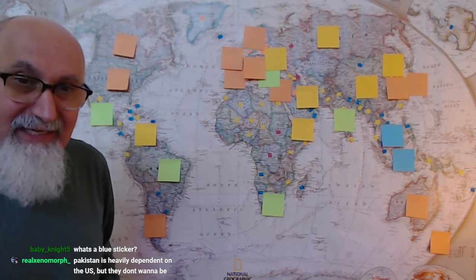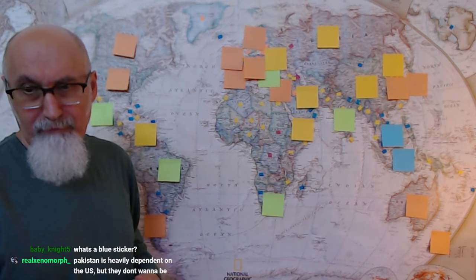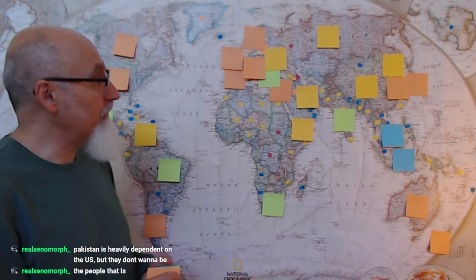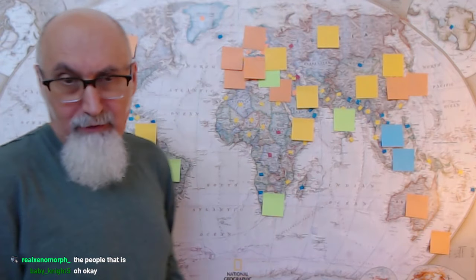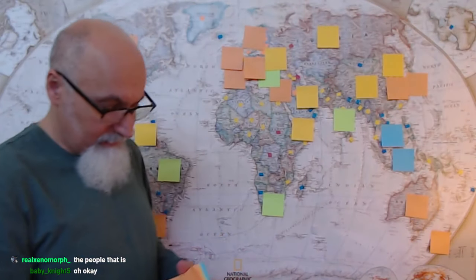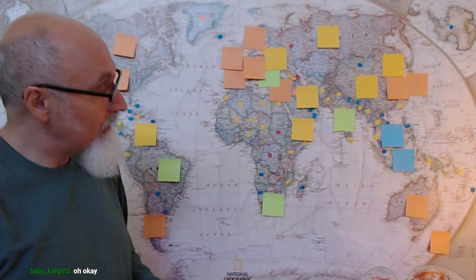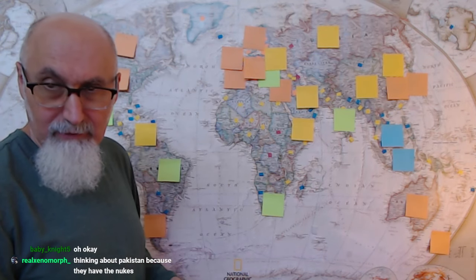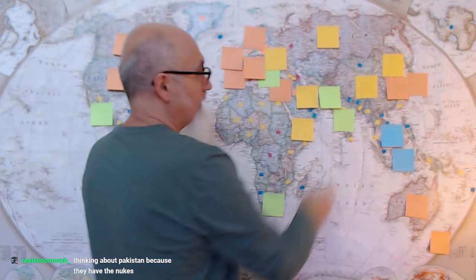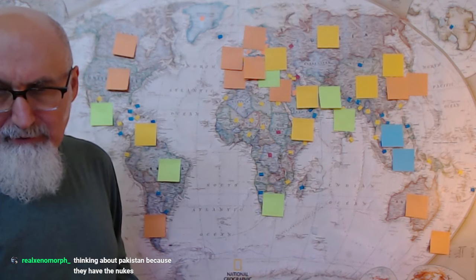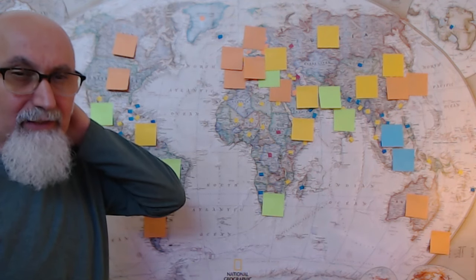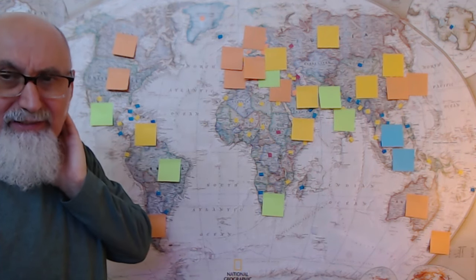Blue sticker is safe. They're not going to play the game, let's say, right? Pakistan, heavily dependent on US, but they don't want to be. Yeah, agreed. Reals in a more Pakistan, right now, right now, United States. But I would also say it could be green. They're trying to play both sides, so maybe green is a better choice for Pakistan. Let's put Afghanistan and Pakistan together as green.